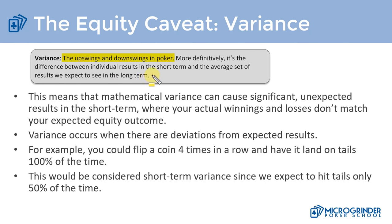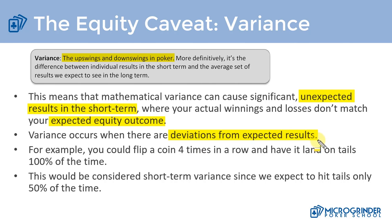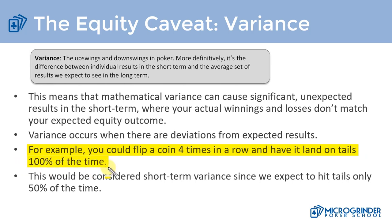Mathematical variance can have significant, unexpected short-term results where the results don't match our expected equity outcome. It's deviations from our expected results — whether we were a favorite and we lost, or we were a dog in the hand and we won. For example, if we flip a coin four times and pick heads but it lands on tails 100 percent of the time, in the long run we expect 50/50, but variance took effect and it landed on tails four times in a row.